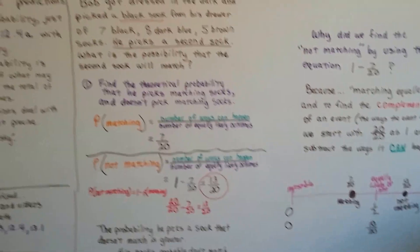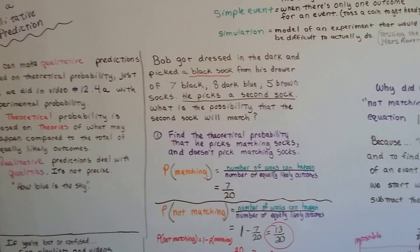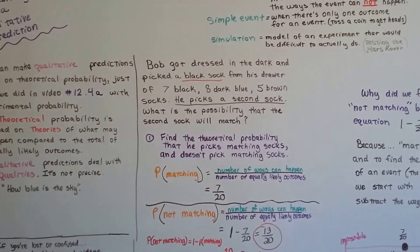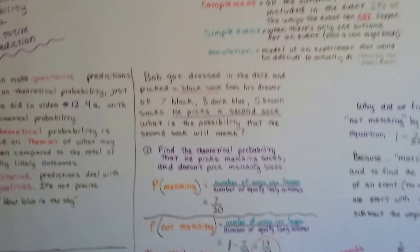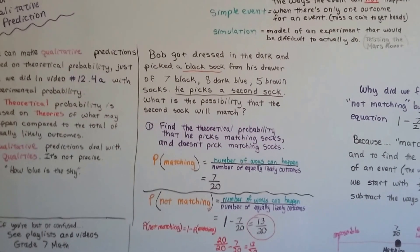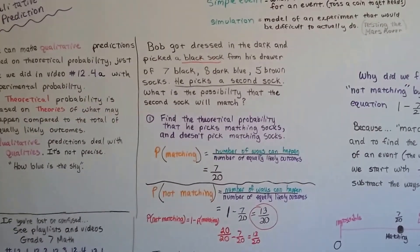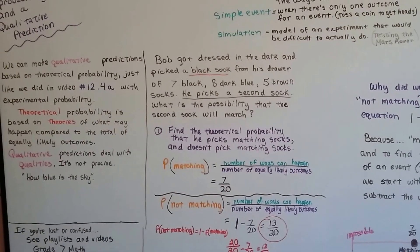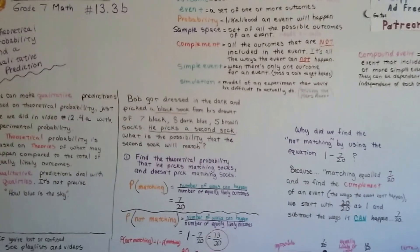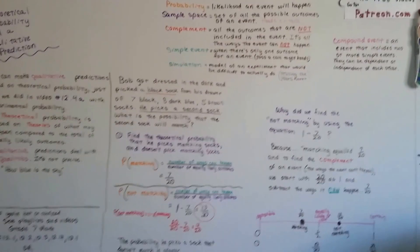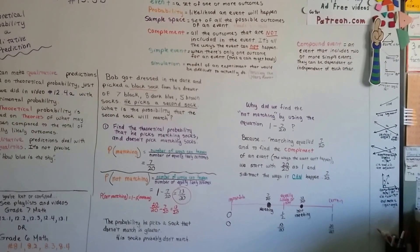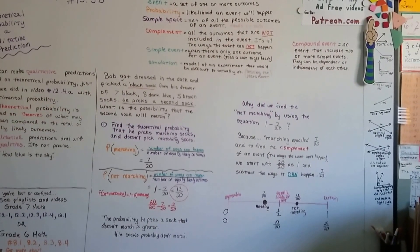We're going to continue on talking about probability. I think we've got one more unit left, and I want to explain discrete distribution and normal distribution. So I'm going to make a quick video, number 13.3C, explaining that. I hope this was helpful — keep your chin up, we're almost done. See you next video.